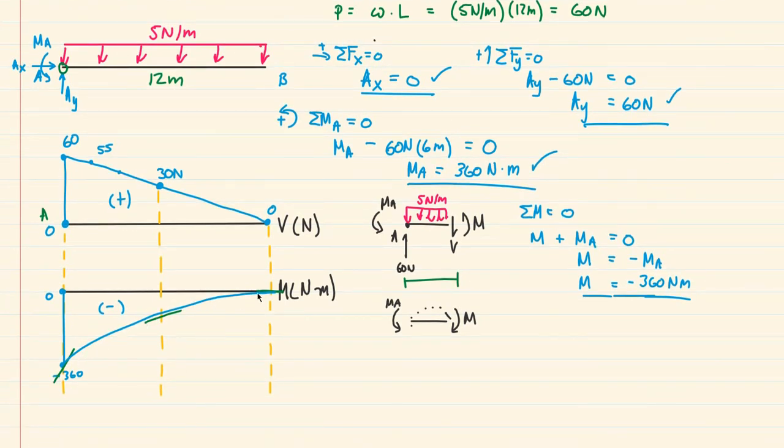So what if we wanted to find any other point along this moment diagram and figure out what the numerical value of that point was? So let's say for an example, halfway at six meters, what would be the moment there? Well, in previous videos, I've been saying that it's just the area under the curve. And that is partially true. And that's because all of our moment diagrams in those previous videos have started at zero. But this one's starting at negative 360. So I'm going to get into a little bit of calculus and give you a more formal definition of how our shear diagram relates to our moment diagram and how we can use that shear diagram to come up with values along any point on the moment diagram. So the formal definition is as follows.